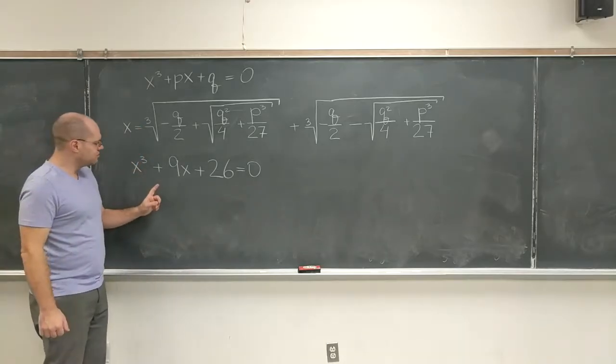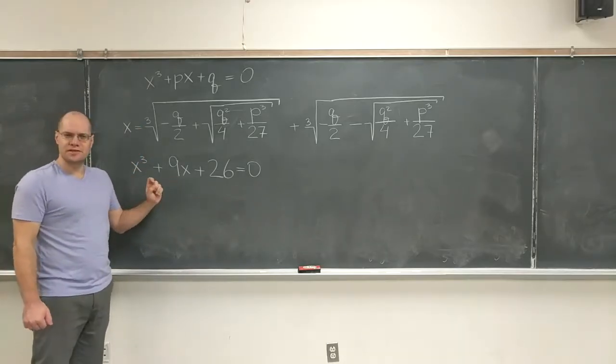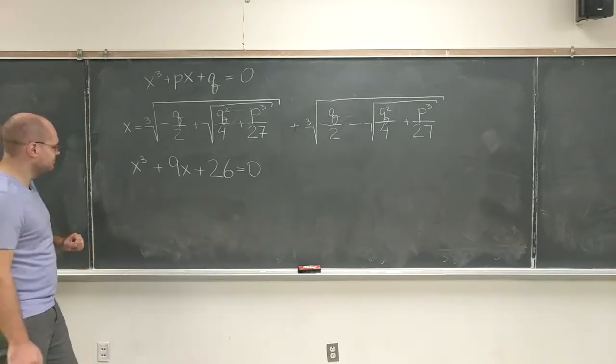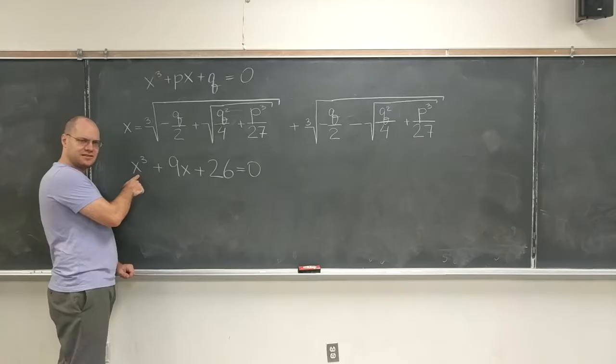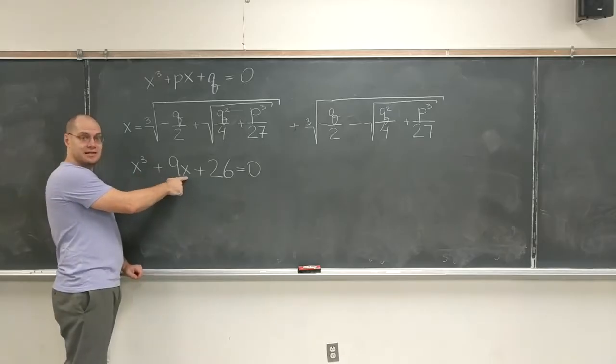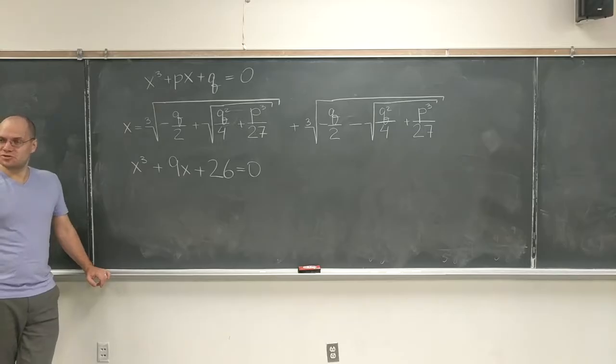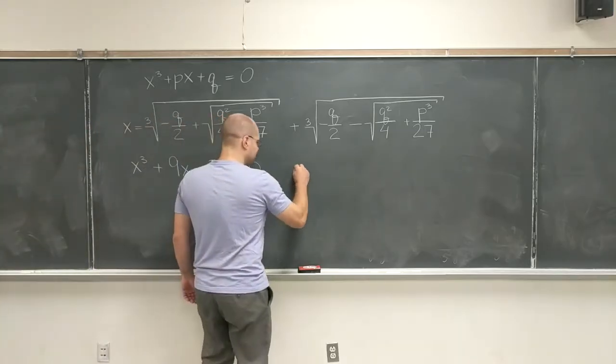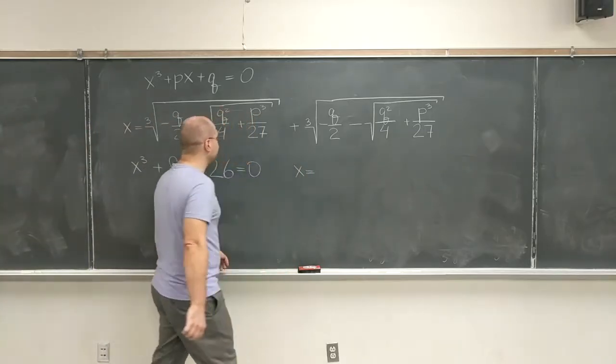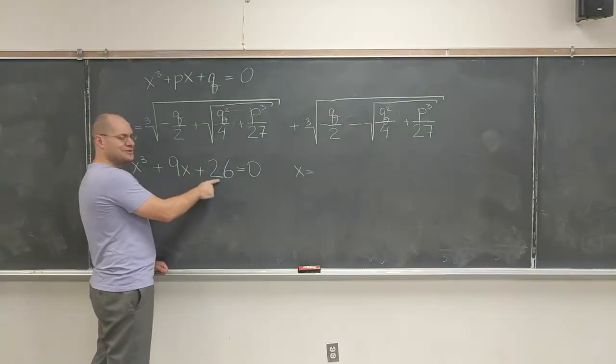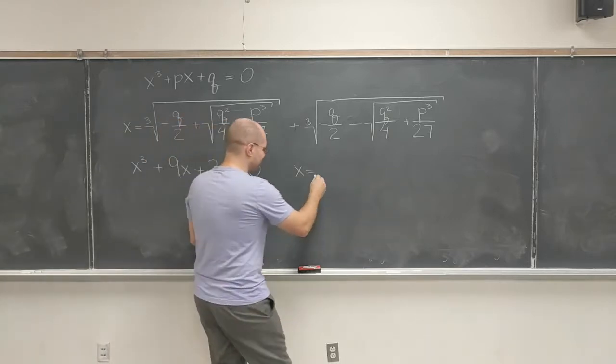Now note that minus 2 is a root. Let's see if we're able to get it out of Tartaglia's formula. So here, P is 9, and Q is 26. So there will be some work.